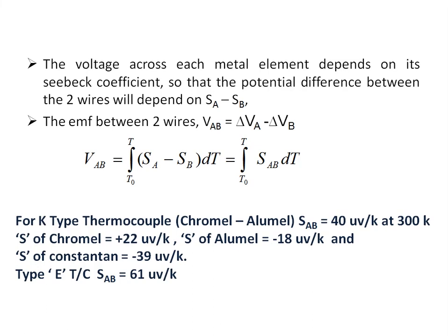For a Type K thermocouple, which is made up of chromel and alumel, chromel is the positive end and alumel is the negative end. The Seebeck coefficient S_AB is 40 microvolts per Kelvin at 27°C. The Seebeck coefficient of chromel is +22 microvolts per Kelvin and that of alumel is −18 microvolts per Kelvin. The Seebeck coefficient of constantan is −39 microvolts per Kelvin, so the Type E thermocouple made of chromel and constantan has a Seebeck coefficient of 61 microvolts per Kelvin (22 − (−39) = 61 µV/K).